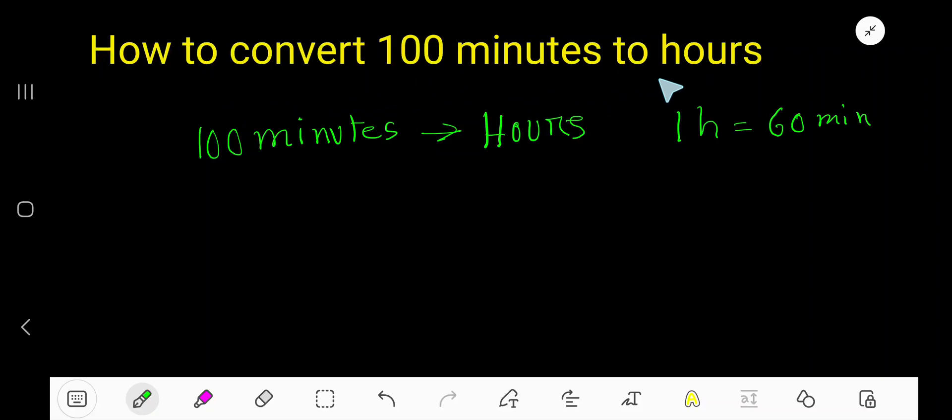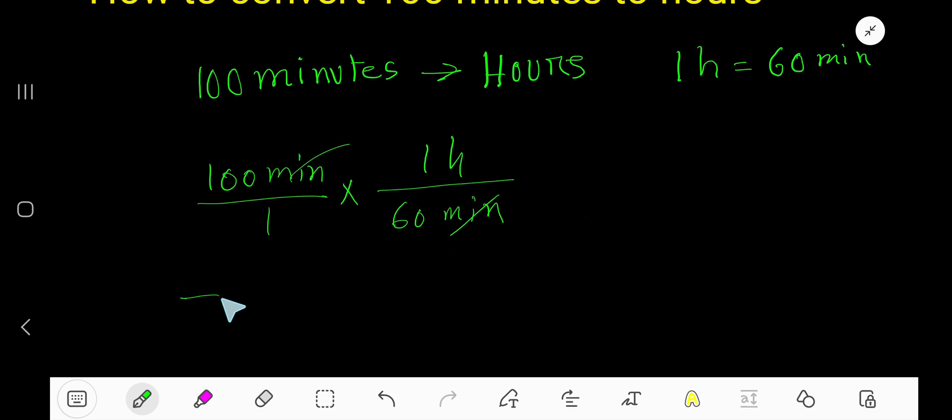How to convert 100 minutes to hours. Let me write the given information: 100 minutes. To cancel this minute, we'll use this conversion equation, and the minute part of this equation will come as a denominator so that we can cancel minute to minute. So this part will come as numerator automatically. Now multiply.